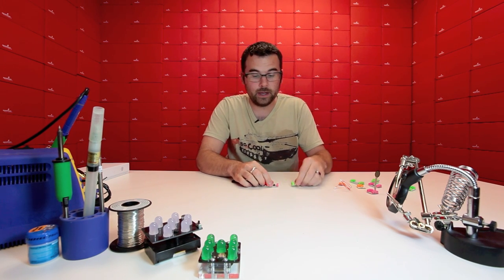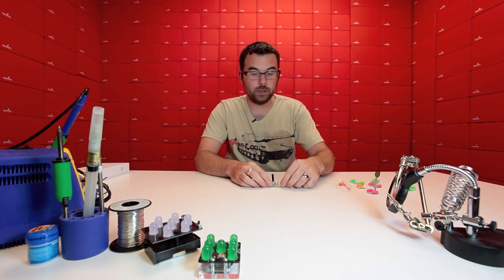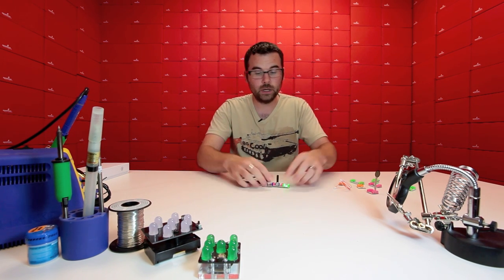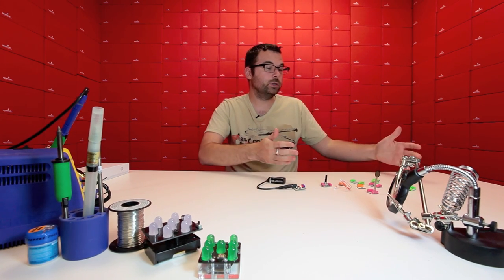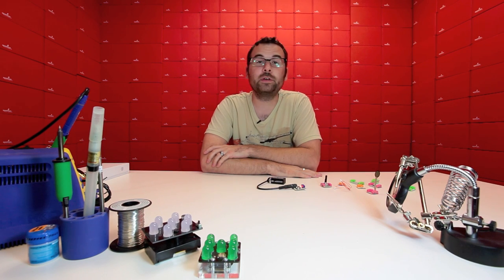Now, let's say we want to dim the light. All we do is take out the button, add a potentiometer, and now we can actually dim the light on and off. This is the basics of this kit. It's a very simple educational kit that shows people how to connect various little bits of electronics together, and you can play with it like that.